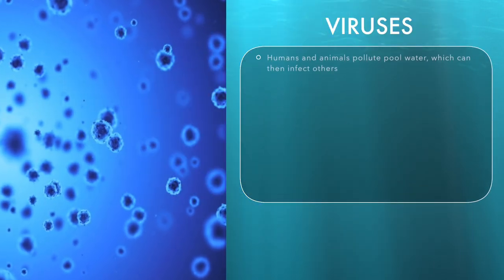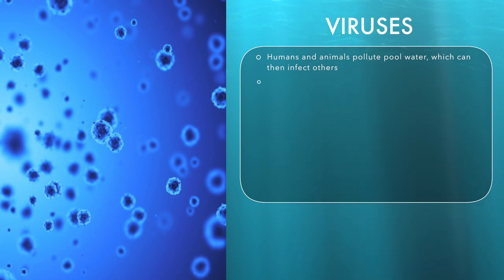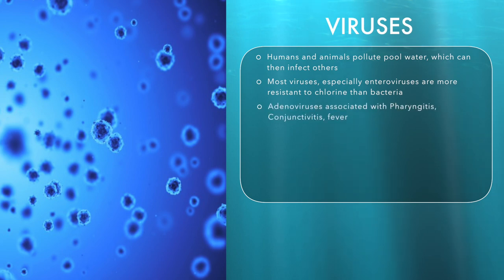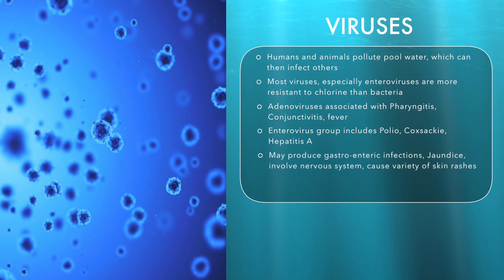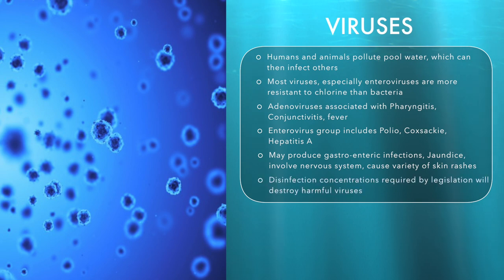Humans and animals pollute pool water with viruses which can then infect other users. Most viruses, especially the enteroviruses, are more resistant to chlorine than bacteria such as Escherichia coli. Adenoviruses are associated with pharyngitis, conjunctivitis and fever. The enterovirus group includes polio, Coxsackie and Hepatitis A. These agents may produce gastroenteric infections, jaundice, involve the nervous system and cause a variety of skin rashes. Disinfection concentrations required by the legislation will destroy the harmful viruses and render the pool water safe.